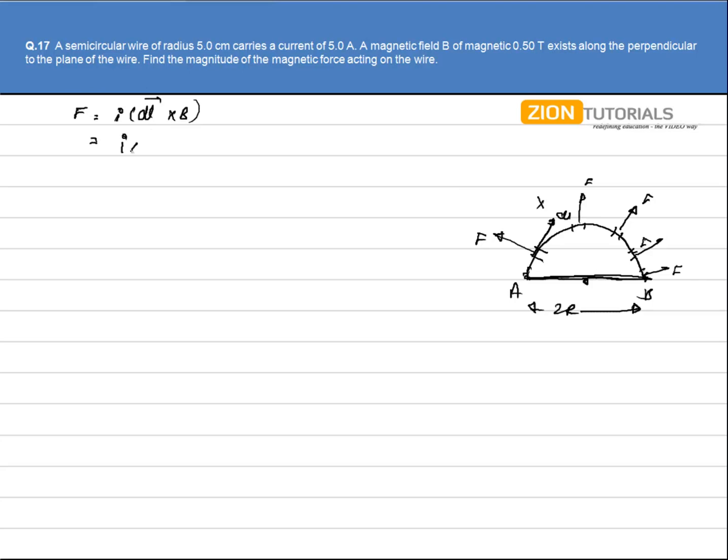So I will take the current I, the length will be 2r into magnetic field, this is my force. And the direction of force will be obviously upward because if I suppose that the current is flowing in this direction, magnetic field is inside, so the force will be in upward direction.